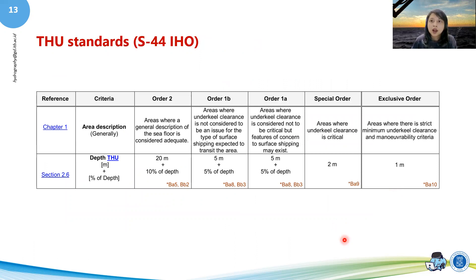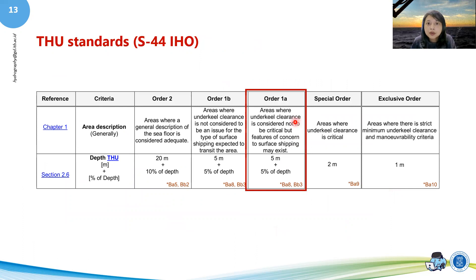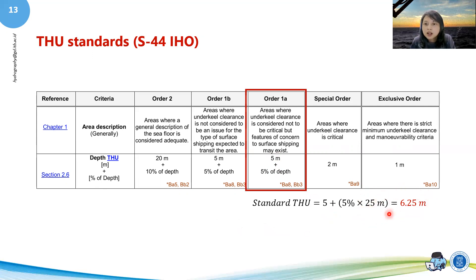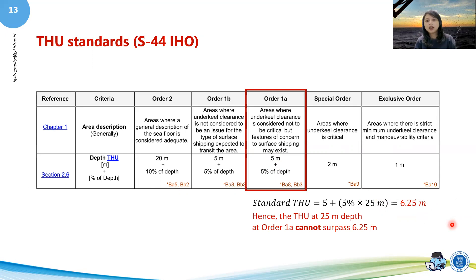The standard THU values can be seen in the S44 IHO standard document. For example, if you're doing an order 1A survey — where you're surveying in an area where underkeel clearance is not that critical, but some features concerning to shipping might exist — you need a THU of 5 meters plus 5% of the depth. So if you're surveying at 25 meters depth, your standard THU must not surpass 6.25 meters. You really need to define which order you're working in; if you're in order 1A, it cannot surpass 6.25 meters.